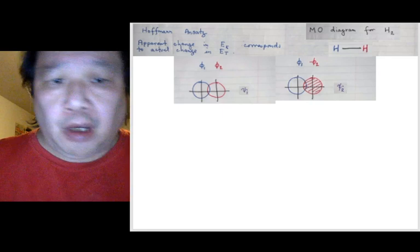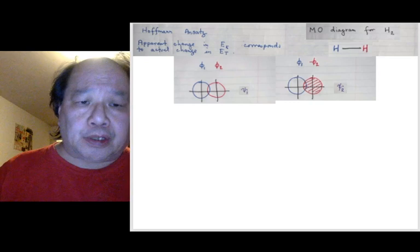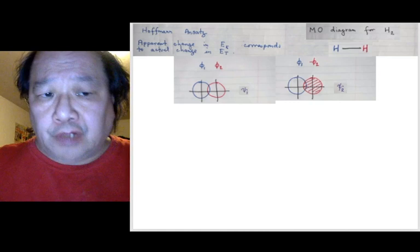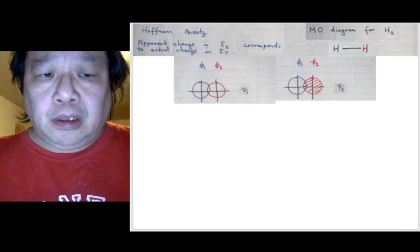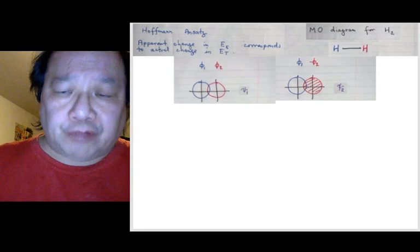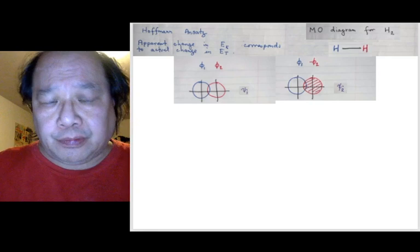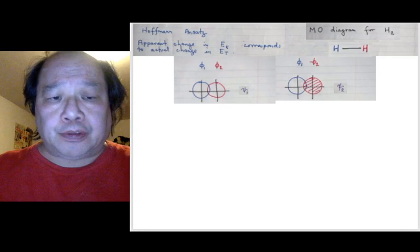So we want to look in the Hoffman picture at the kinetic energy. Kinetic energy depends on velocity. Velocity depends on momentum. Is momentum directly proportional or indirectly proportional to wavelength? Put it in chat. Momentum is directly or indirectly proportional to wavelength? Indirectly proportional. So we must figure out what happened to lambda.